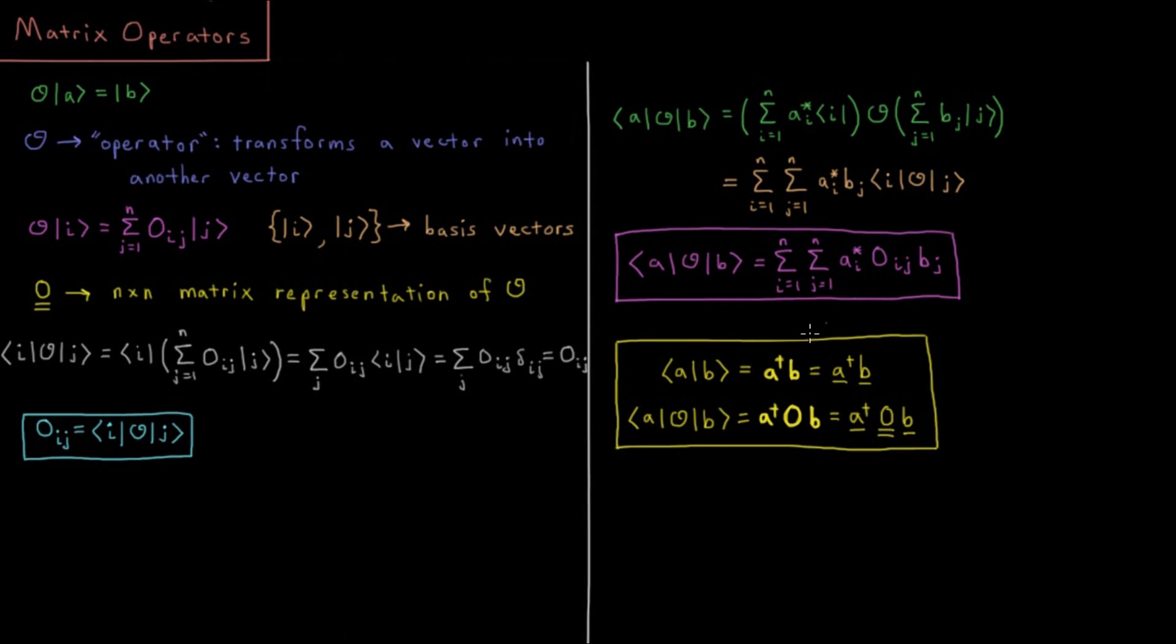So all we need to know are the coefficients of a, the coefficients of b, and the matrix elements of O in order to get the result of this operator acting on b and that result overlapping with a. This is a type of quantity that shows up over and over in quantum mechanics, computational chemistry, and the types of electronic structure theory we'll be studying later in this playlist.